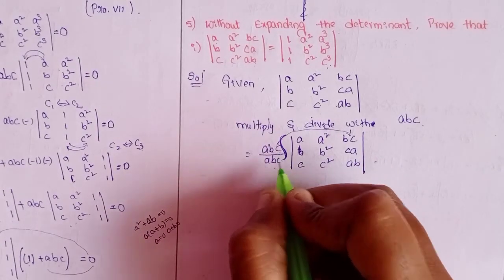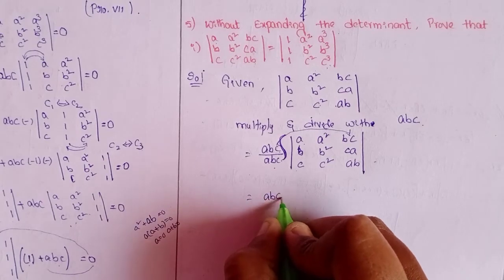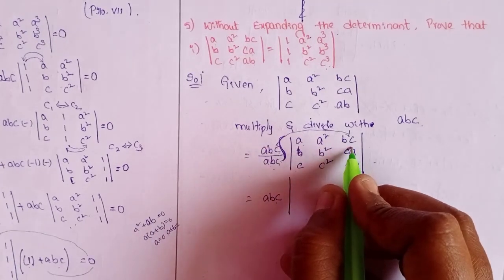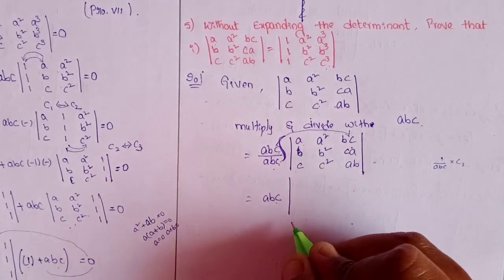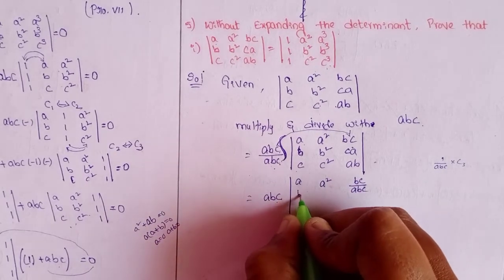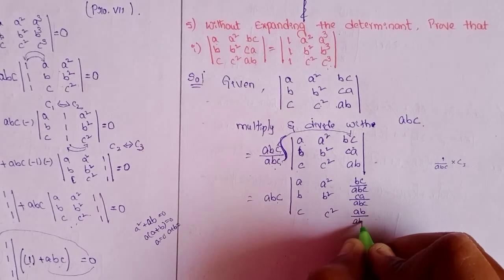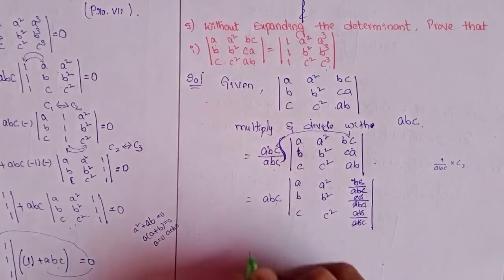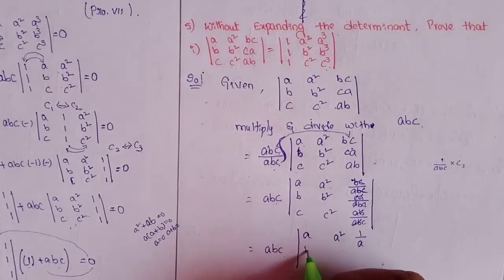Write (1/abc) times the determinant, with abc multiplied into column 3 only. So in the denominator abc divides column 3: row 1 becomes [a, a², bc/abc], row 2 becomes [b, b², ca/abc], row 3 becomes [c, c², ab/abc]. Cancel: ac cancels, ab cancels — what remains in column 3 is [1/a, 1/b, 1/c], and outside we have abc times the determinant.